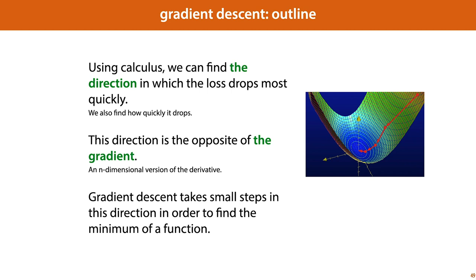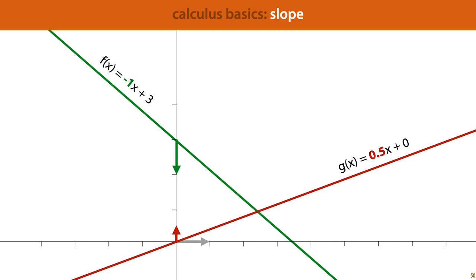We'll be using calculus, so let's review some of the basic concepts. The first is that of a slope. If we have a simple linear function in one dimension, the value that is multiplied with the input argument is called the slope of that function. A line with a slope of 1.5 simply means that if we take a step of 1 to the right, the value of the linear function increases by 0.5.